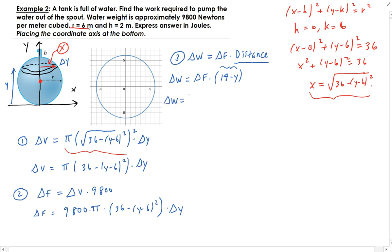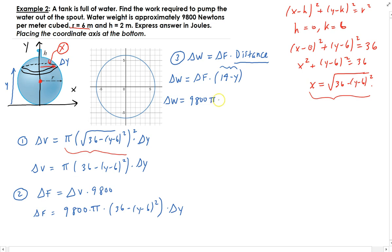So the incremental work is: 9800π(36 − (y − 6)²)(14 − y) Δy.